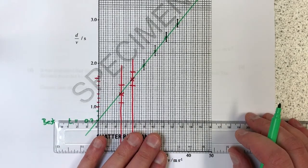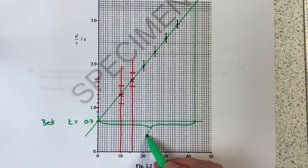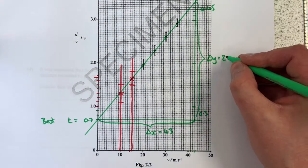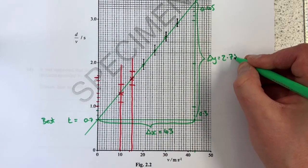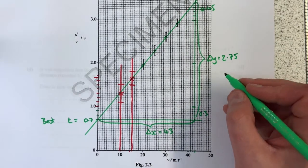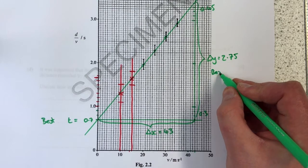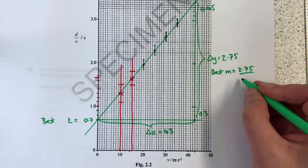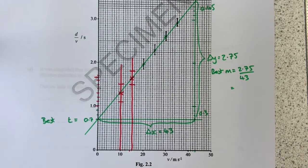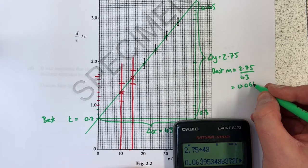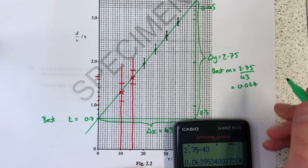Next deal is to work out the gradient of the line. Always draw the biggest possible triangle you can. dx, that's going to be 43. My dy, 2.75 is going to be my best dy. And so therefore my best gradient is going to be dy by dx, 2.75 divided by 43, and that best value has to be 2 sig figs, 0.064 is going to be my best value for the gradient.